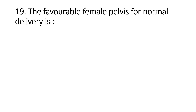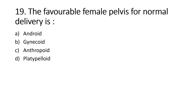The favorable female pelvis for normal delivery is: Option A, Android; Option B, Gynecoid; Option C, Anthropoid; Option D, Platypelloid. Right answer is Option B, Gynecoid. The gynecoid pelvis is the most favorable type for normal vaginal delivery. Theory classes on anatomy and physiology of the female reproductive system will be uploaded in separate videos.